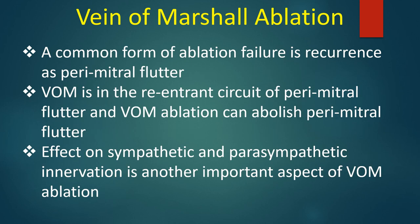A common form of ablation failure is recurrence as perimitral flutter. Vein of Marshall is in the re-entrant circuit of perimitral flutter, and Vein of Marshall ablation can abolish perimitral flutter. The effect on sympathetic and parasympathetic innervation is another important aspect of Vein of Marshall ablation.